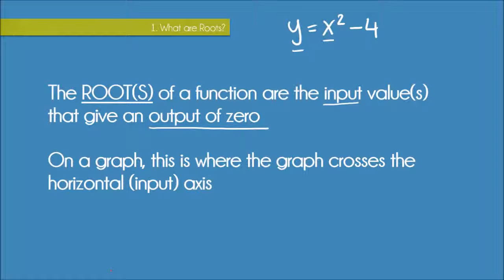So if your function was y equals x squared minus 4, where x is your input and y is your output, the roots of that function would just be the x values that give you a y output of zero. And as we'll see in some later examples, we can solve for these roots by letting y equals zero in our equation.